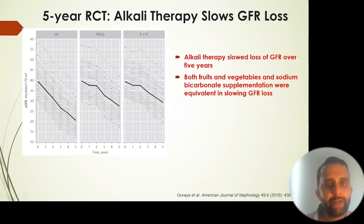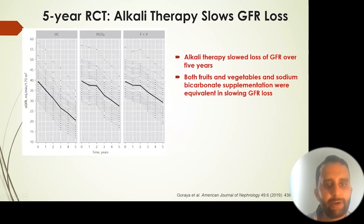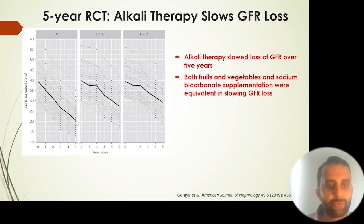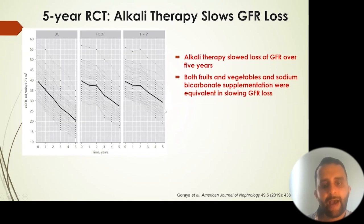Finally, the group treated with fruits and vegetables instead of bicarbonate started from the same place and ended up in pretty much the same or slightly better place as their bicarbonate-treated counterparts — just below 30, around 28 or 29 — compared to the 20 seen in the usual care group. The take-home point is that eating fruits and vegetables slows the progression of kidney disease by treating this acid accumulation.